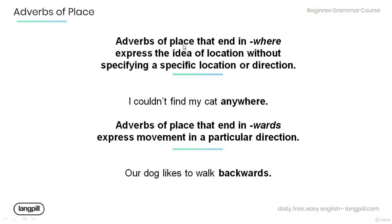Adverbs of place that end in 'where' express the idea of location without specifying a specific location or direction. Have a look at the example below. The adverb of place 'anywhere' expresses the idea of location, but it does not specify a specific location or direction.